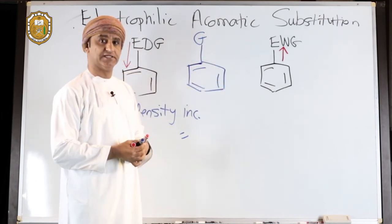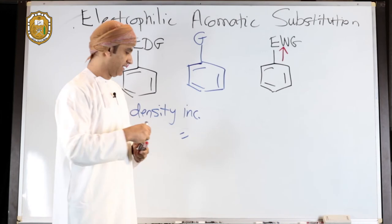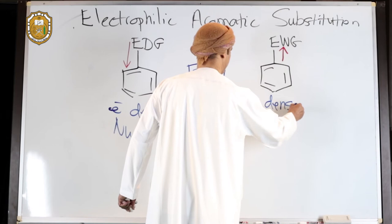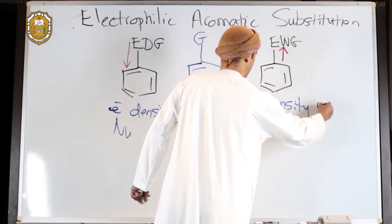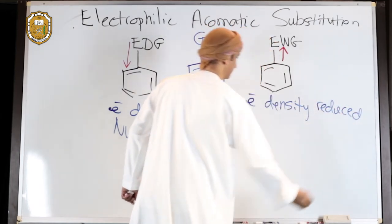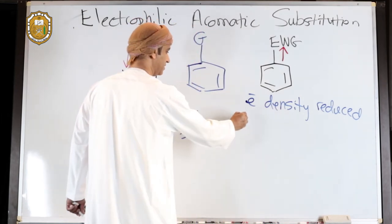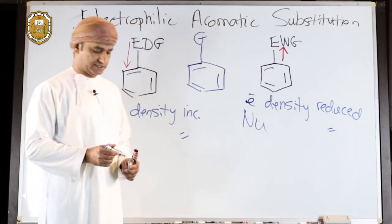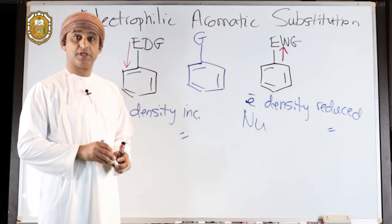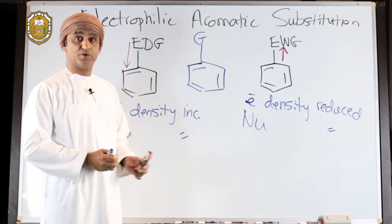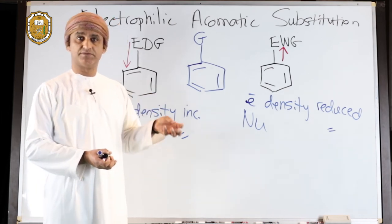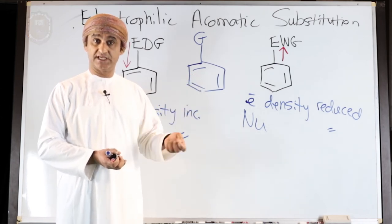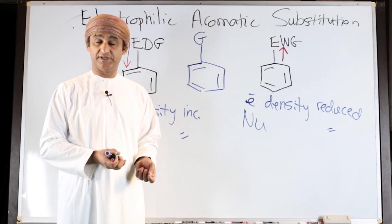An electron-withdrawing group withdraws electrons from the benzene ring. The electron density, as a result, is reduced — so electron density is reduced or decreased. The nucleophilicity is also reduced, and of course the reactivity would be lowered. Electron-withdrawing groups can withdraw electrons by either inductive effect or by resonance. We will take again examples of the two types of electronic effects.